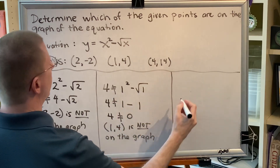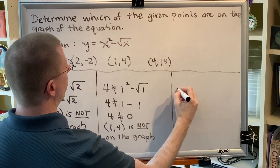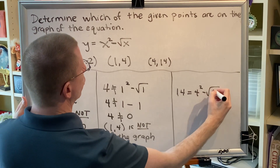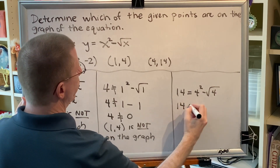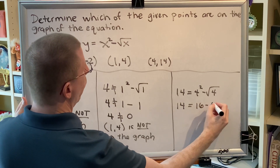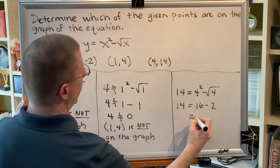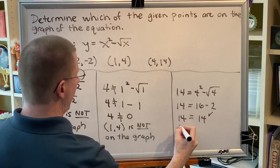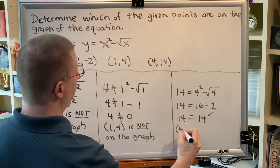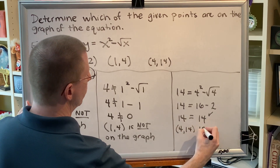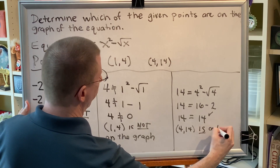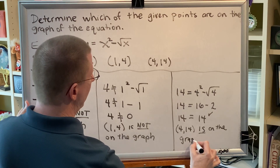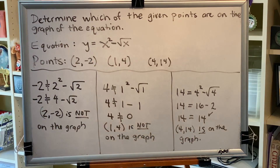Third point: (4, 14). We write 14 equals 4 squared minus the square root of 4. 4 squared is 16, the square root of 4 is 2, and 16 minus 2 is 14. These match, so the point (4, 14) is on the graph. That means it is a solution of the equation.